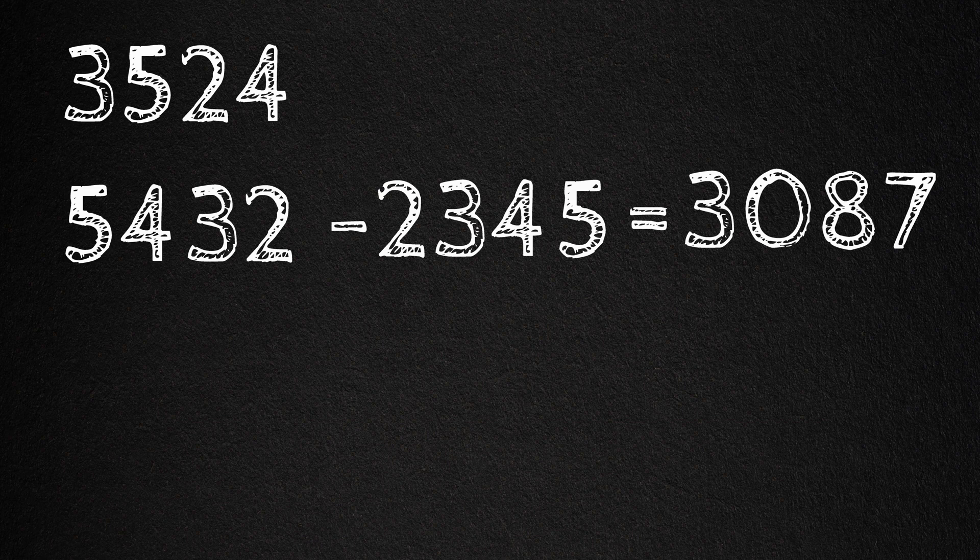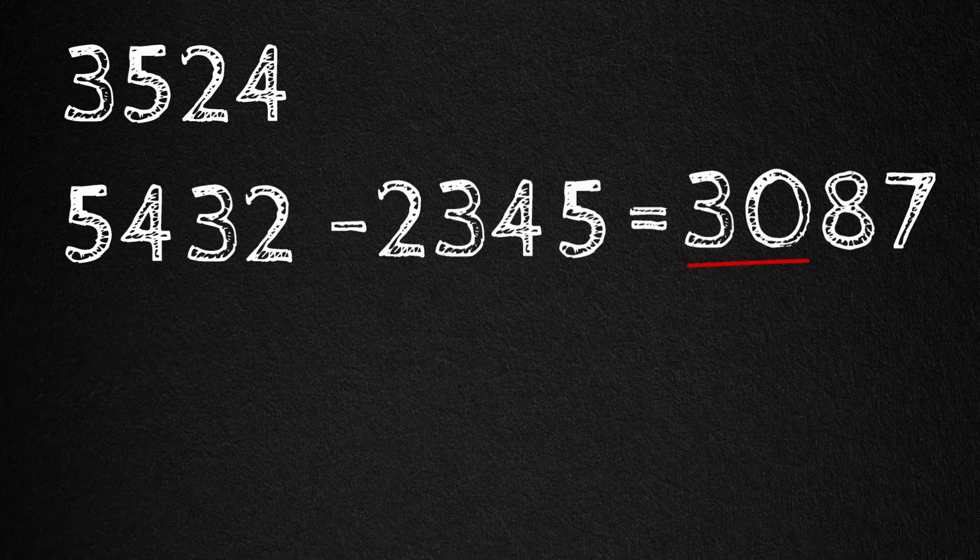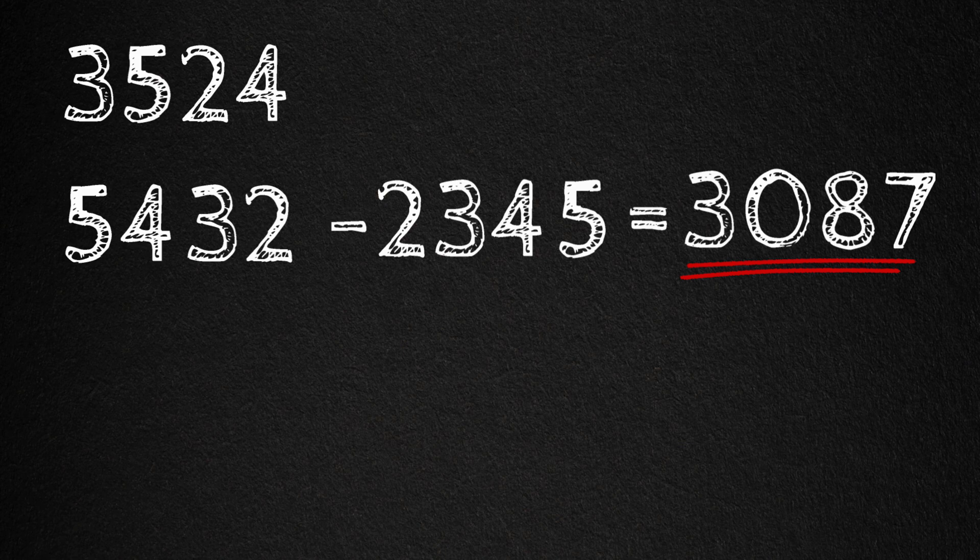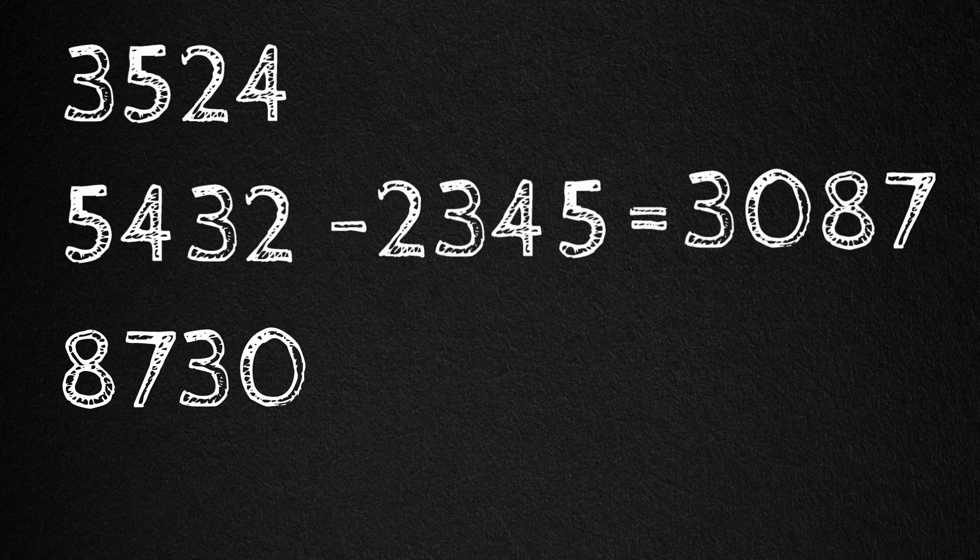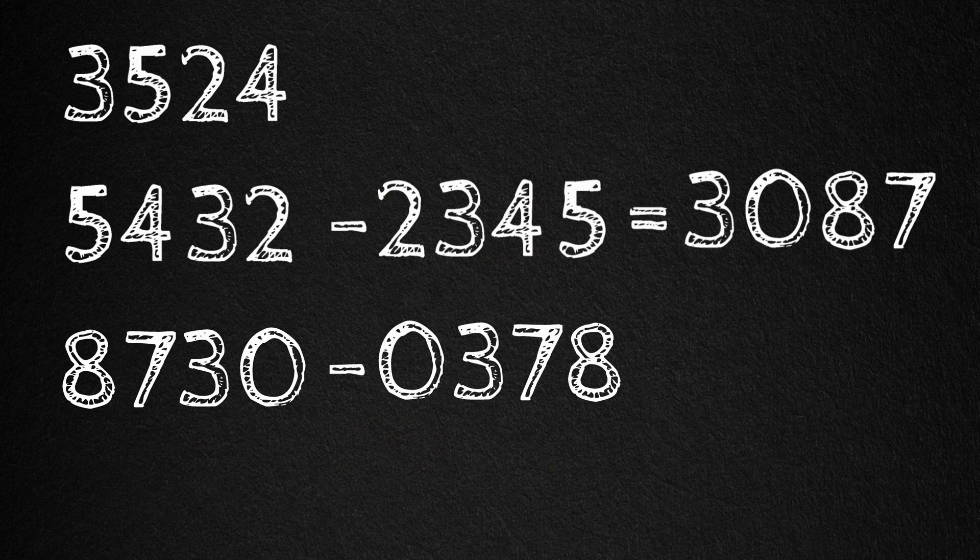Now repeat. Rearrange the result in descending order. So 3087 in descending order gives us 8730. In ascending order, 0378. Subtract. And we get 8352.